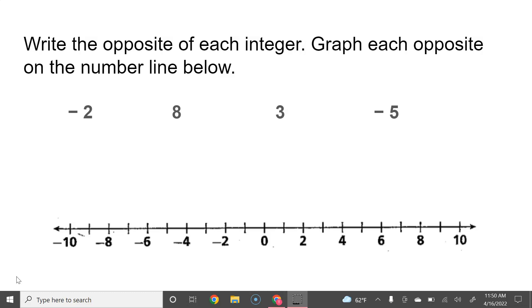If I have the integer negative 2, I'm going to go ahead and think of what is the opposite. Negative 2 is right here on my number line, and I know that is 2 units from zero, so I know that the opposite will then be 2 units to the right. So the opposite of a negative 2 is a positive 2.